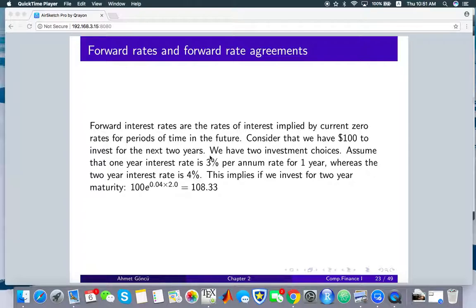So this implies, basically, you can actually draw a timeline easily. And what we have here is the two year here and you have the end of one year here. And initially you have this $100. So if you directly invest for two year maturity, what you get at the end of two years is $108.33.